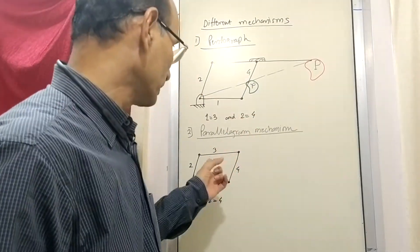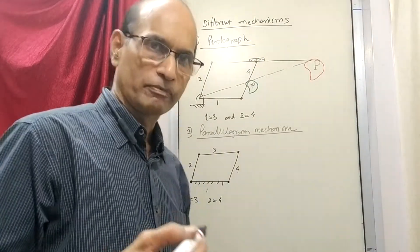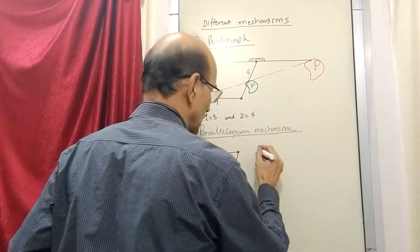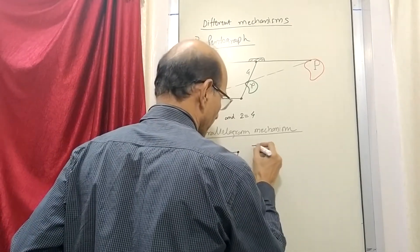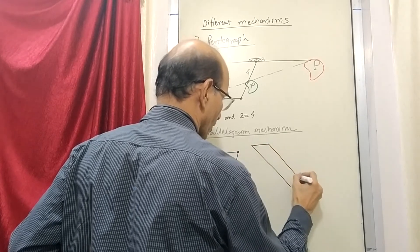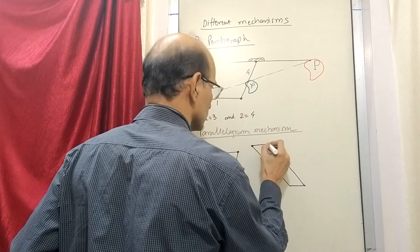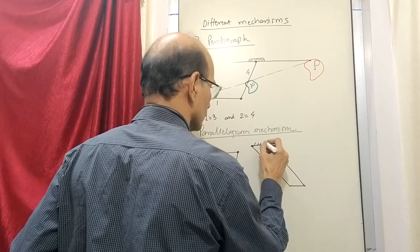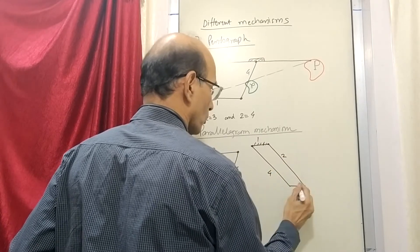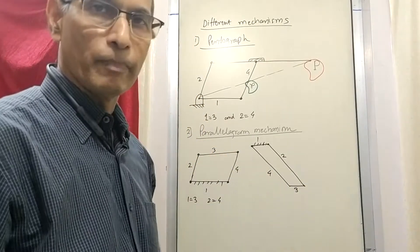Now this fact is made use of for preparing a drafting machine. For drafting machine they are using this method where same arrangement is made. I will just draw that again. So one two three and four. Same parallelogram mechanism.